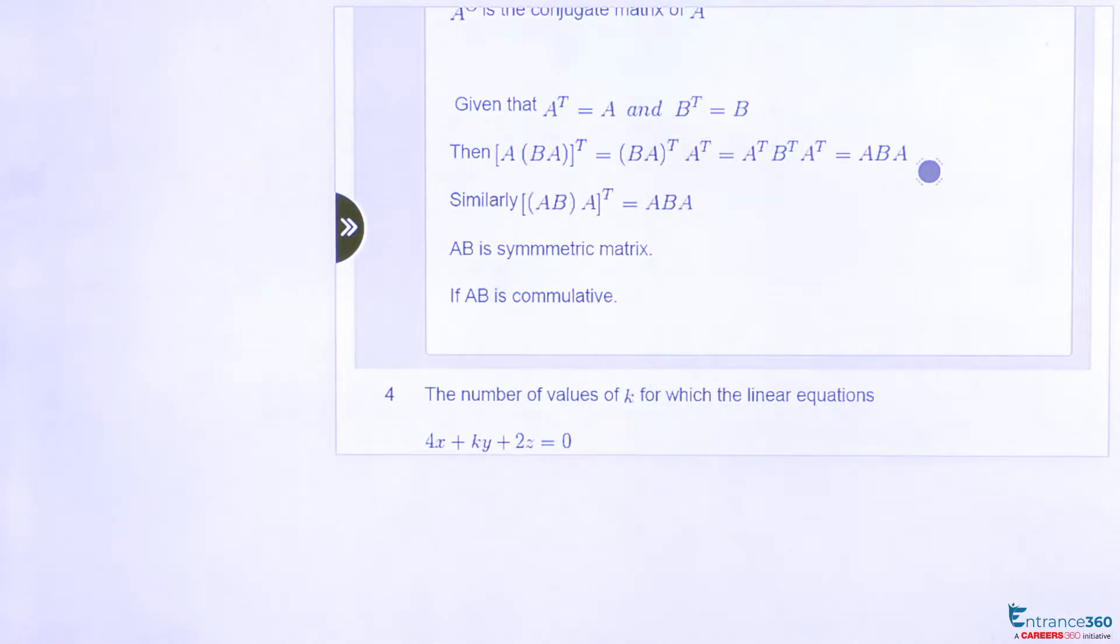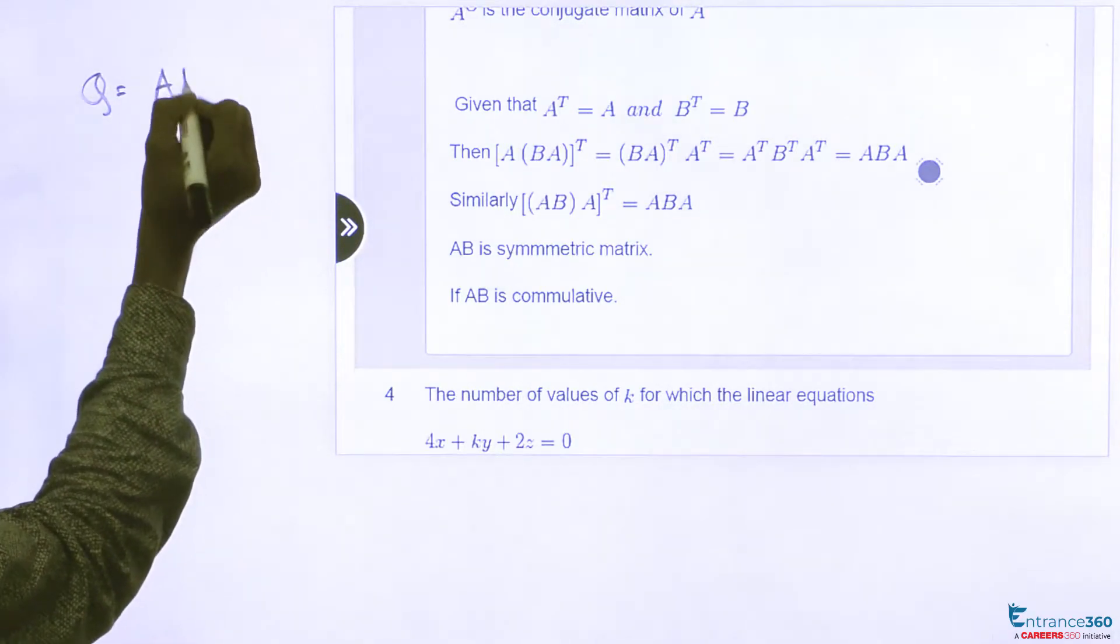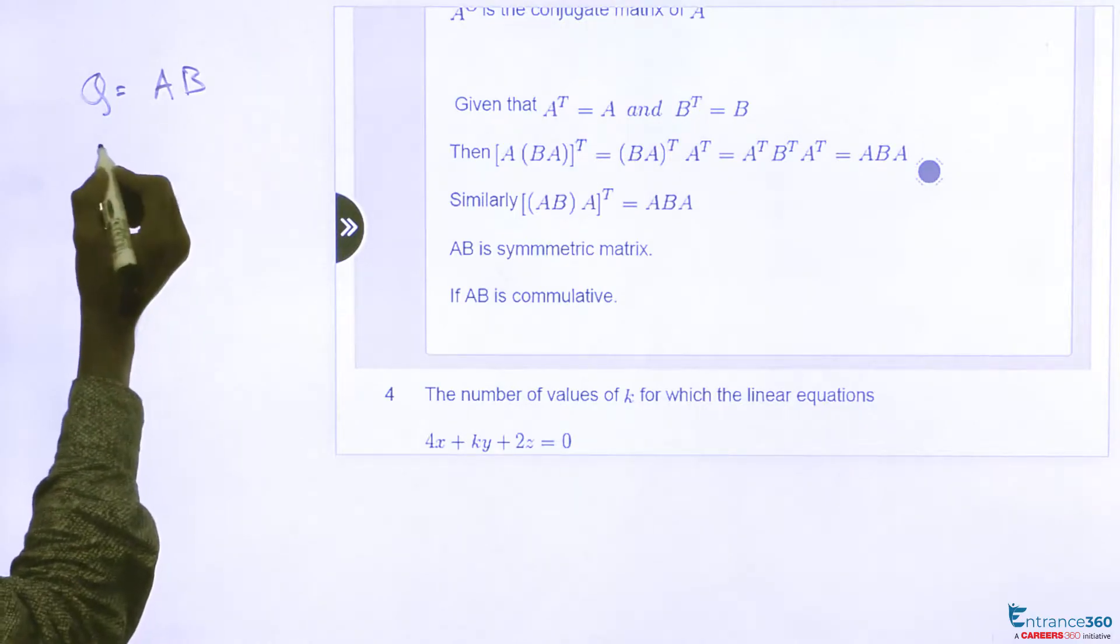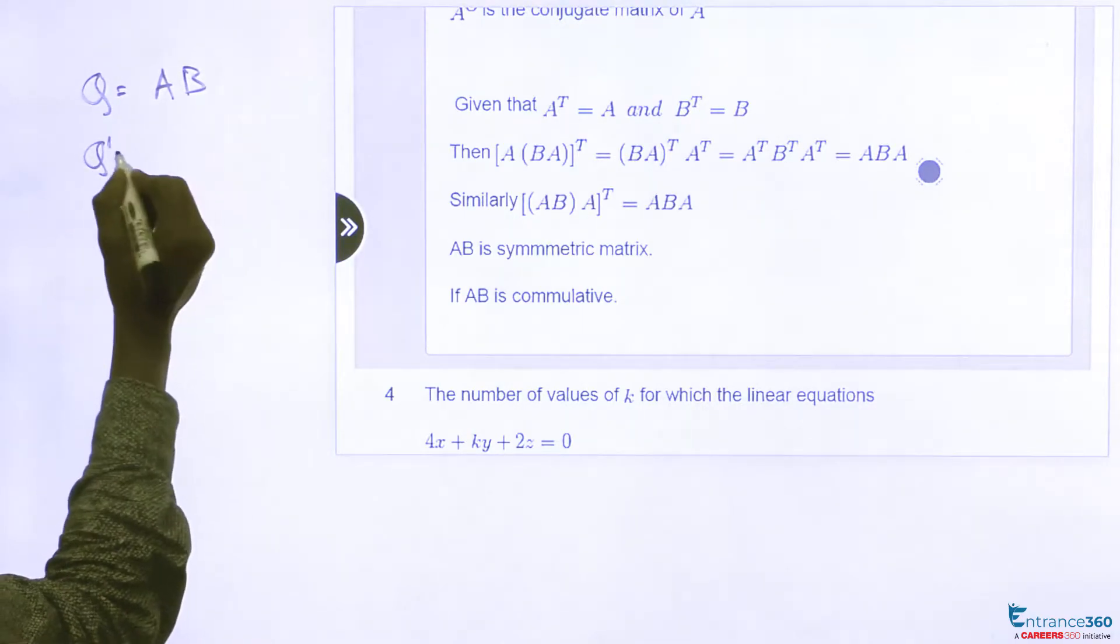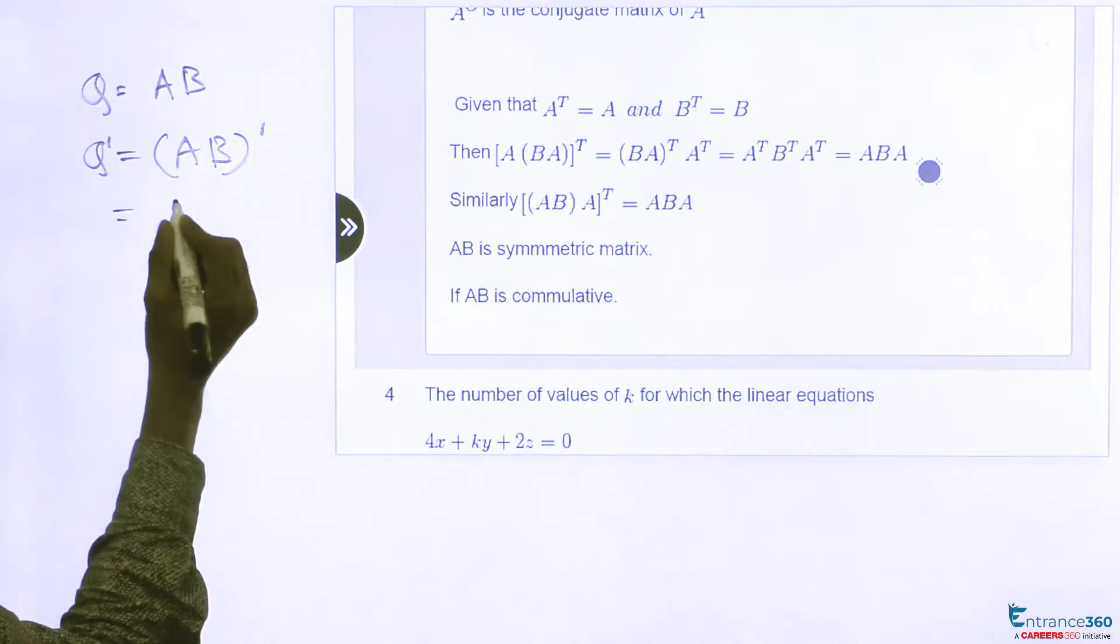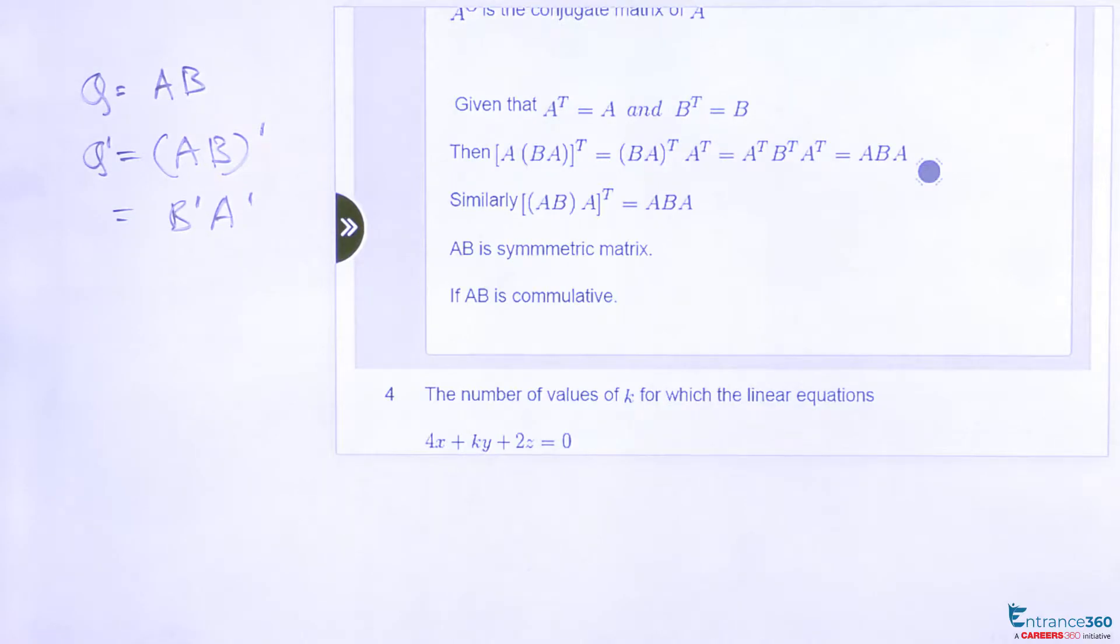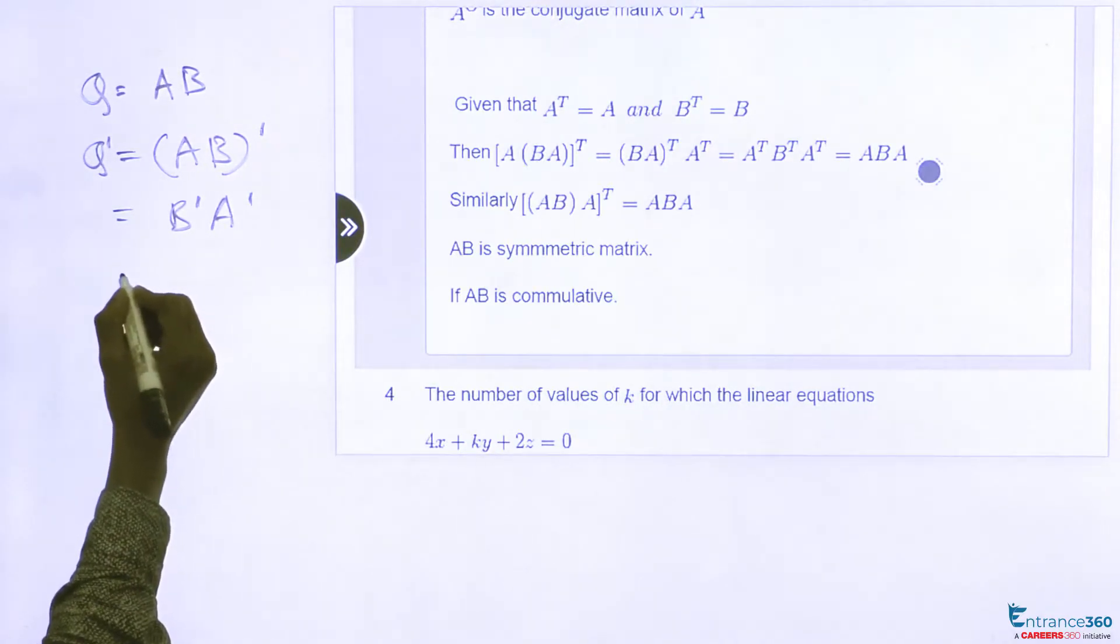Let's go to statement 2. Let's take Q is equal to AB. Take transpose both sides. Then Q transpose will be (AB)^T. We can write this as B^T A^T. And since A and B is symmetric,